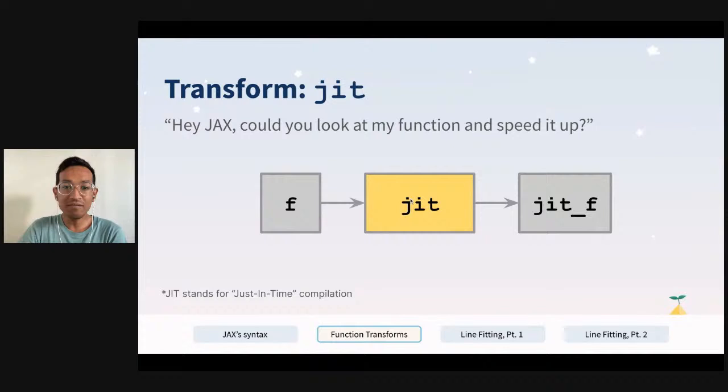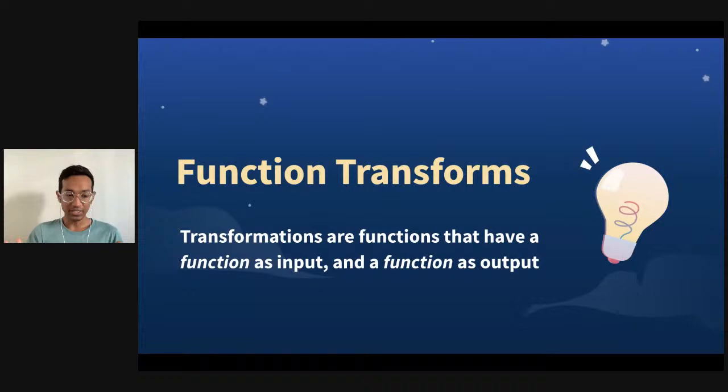So to summarize: JIT is a function transform in JAX — function in, function out. It takes in a function and returns another, faster function.